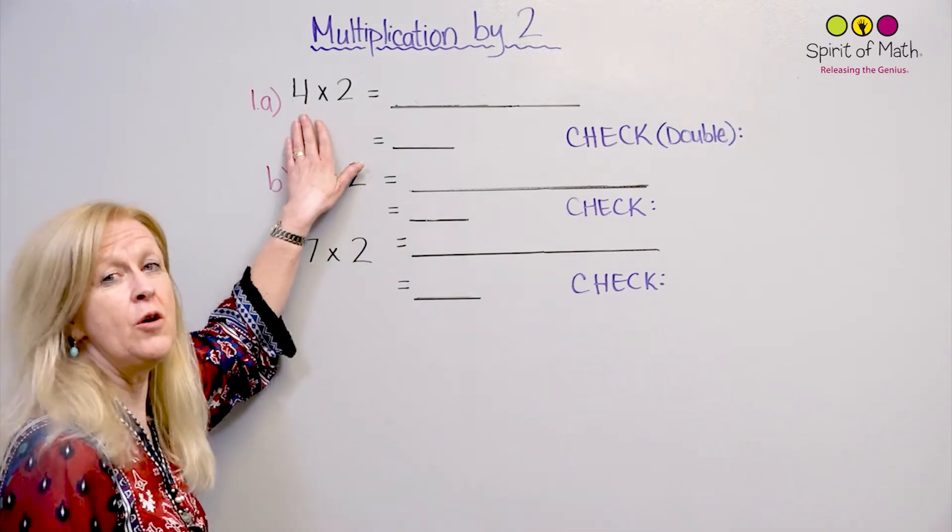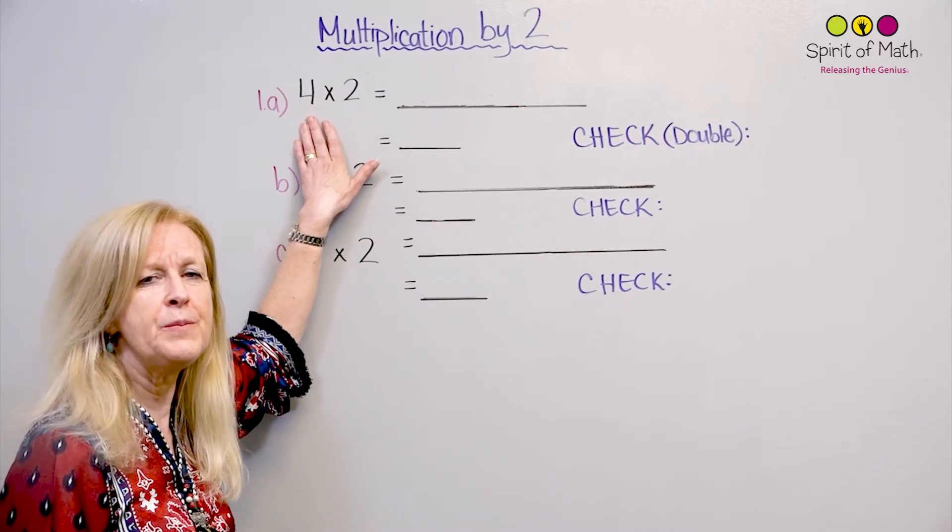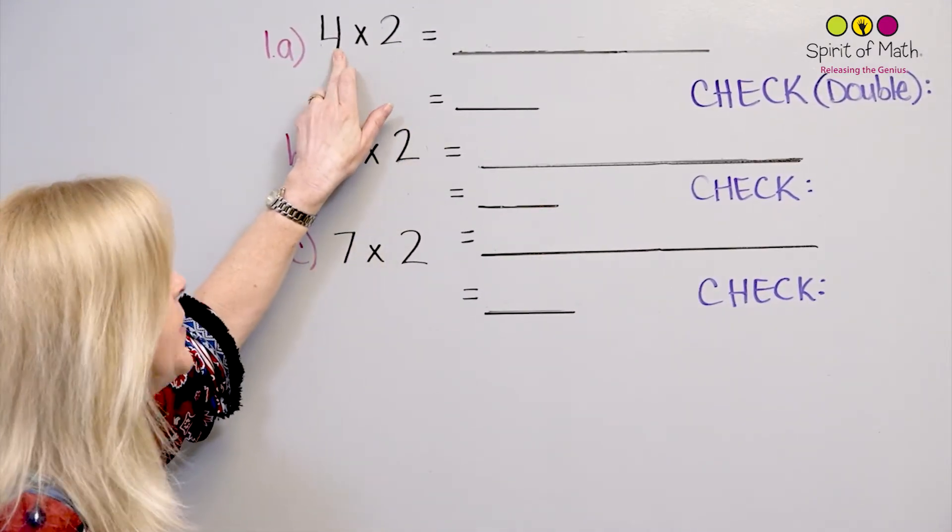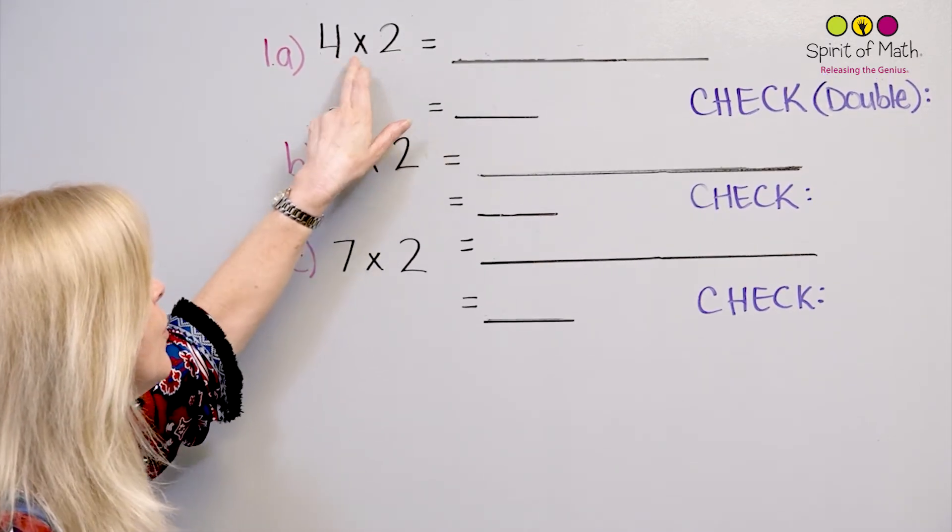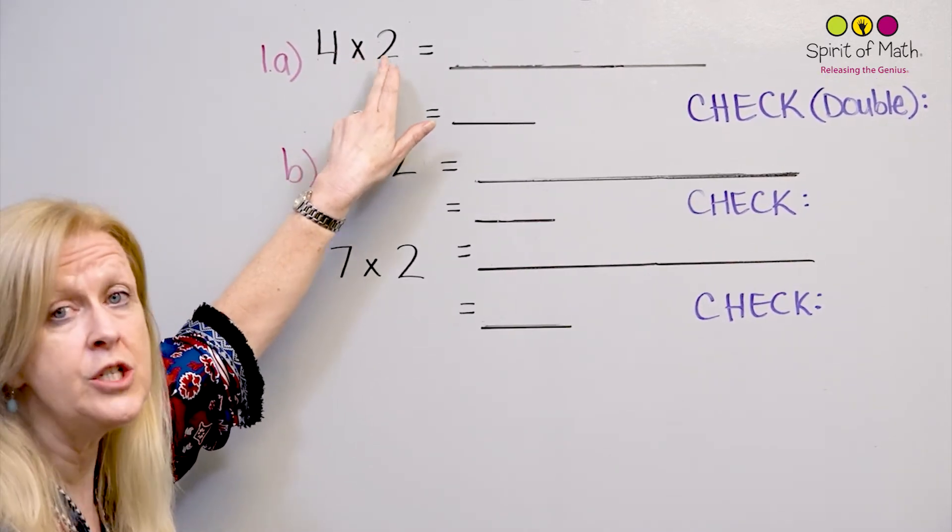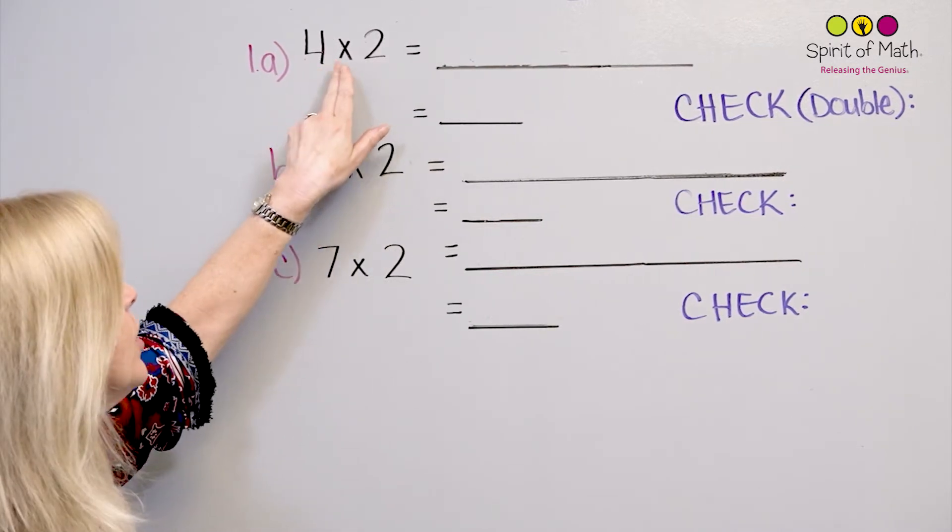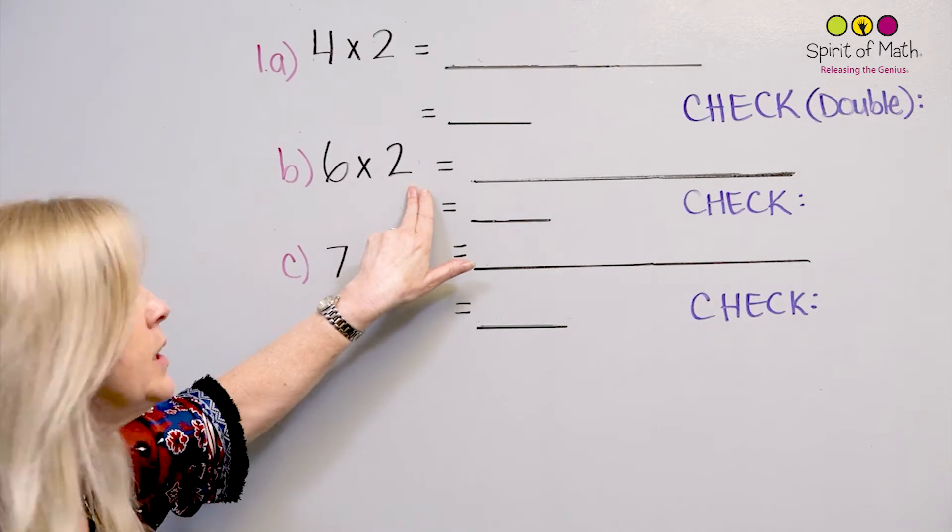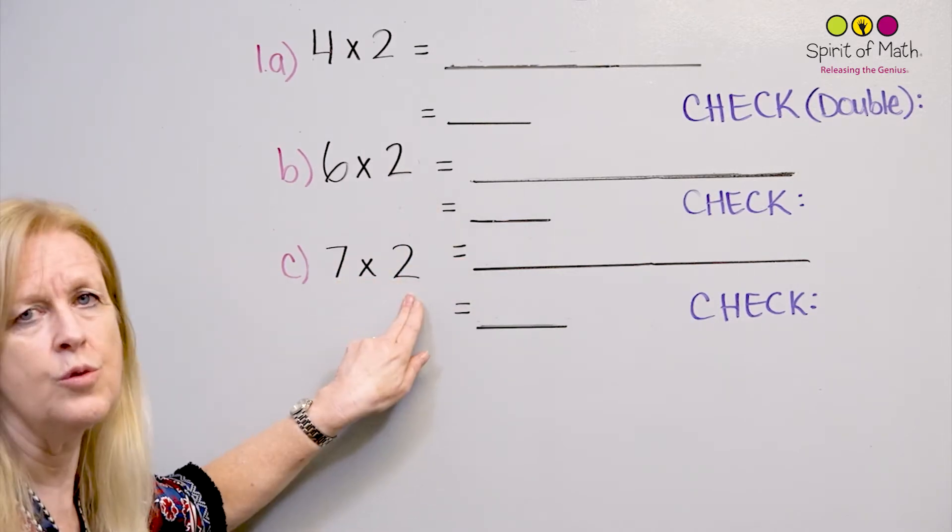So here, if you notice, it's very similar to multiplying by 5 or by 10. It's the same idea. And this is what you say is 4 times 2, or 4 multiplied by 2, or you could say 4 by 2. This 6 times 2, 7 times 2.